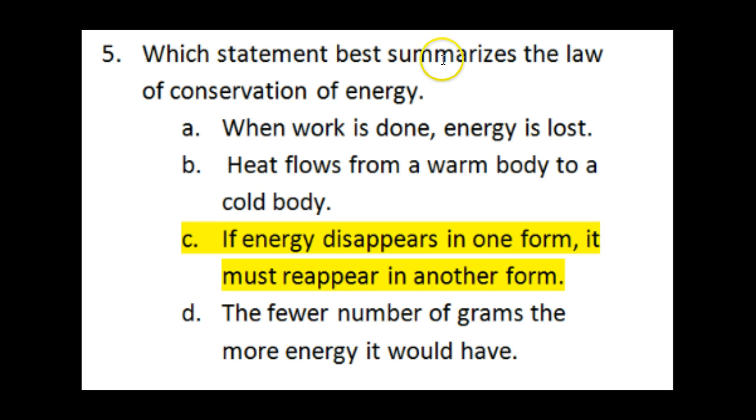Number five said, which statement best summarizes the law of conservation of energy? Well, A wouldn't have been right because A talks about energy being lost. Energy's not lost. It never is. B talks about something flowing from heat, flowing from a warm body to a cold body. And we have never learned anything about that yet. And then D talks about the fewer number of grams, the more energy it would have. And we haven't really learned anything about that either.